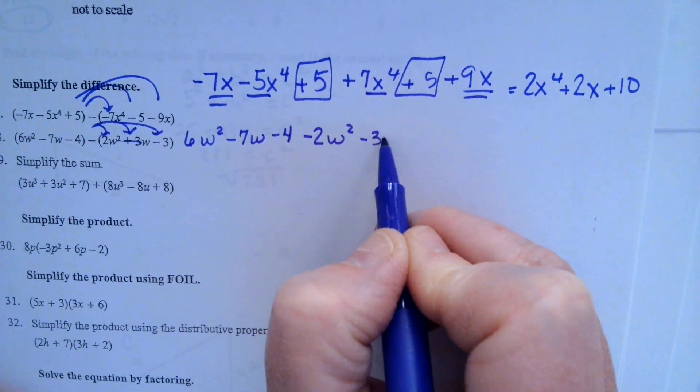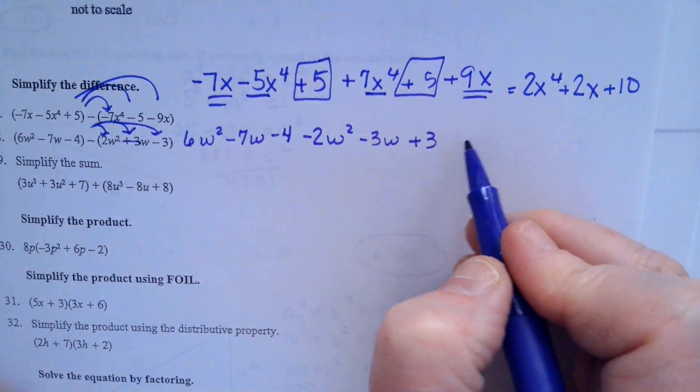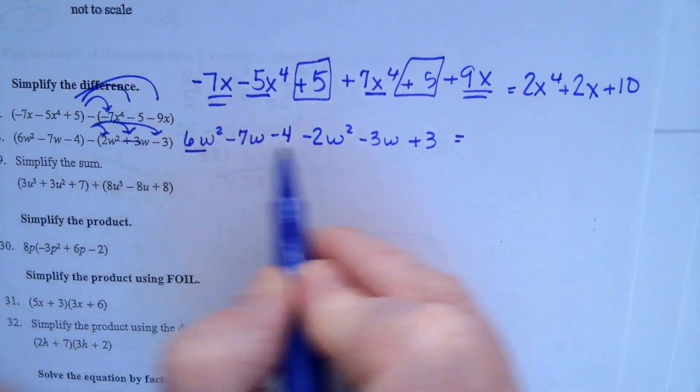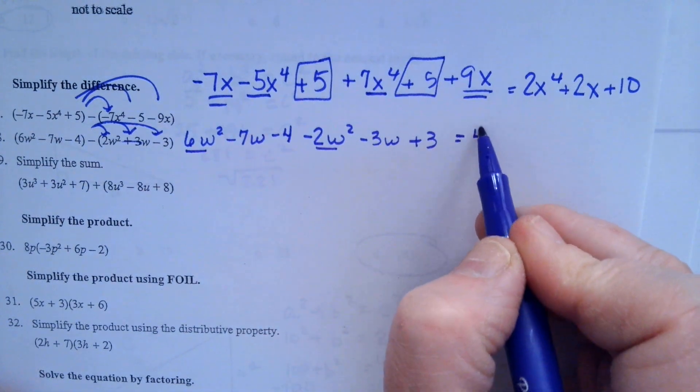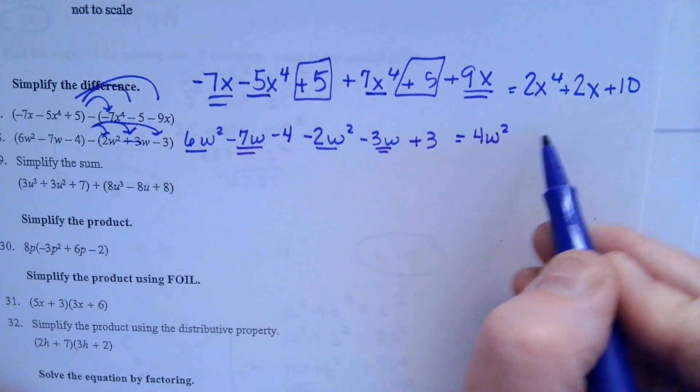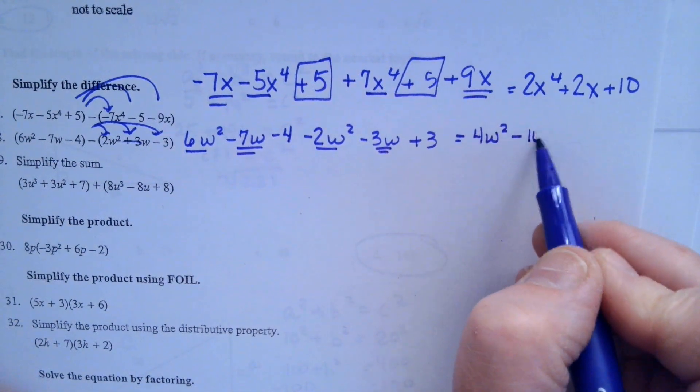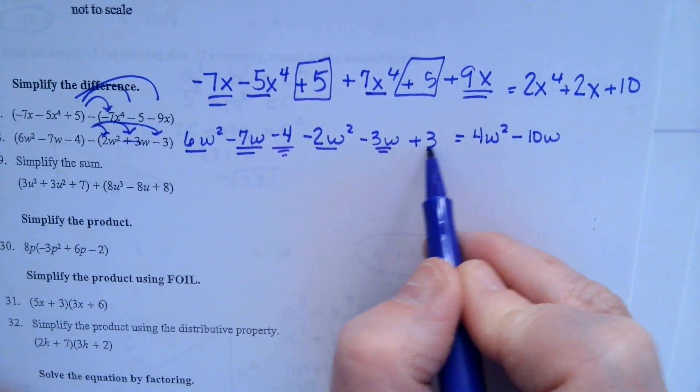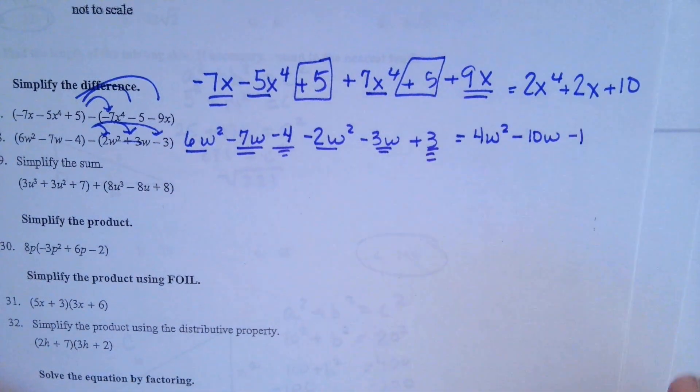The second one becomes negative 2w squared, negative 3w plus 3. Now we're ready to combine like terms. 6w squared minus 2w squared is 4w squared. Negative 7w negative 3w is negative 10w. And negative 4 plus 3 is negative 1.